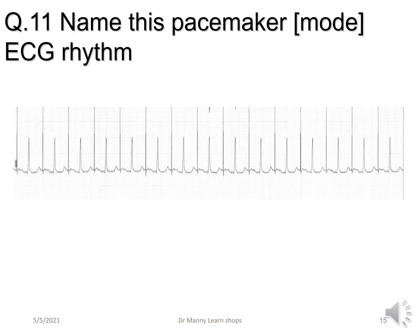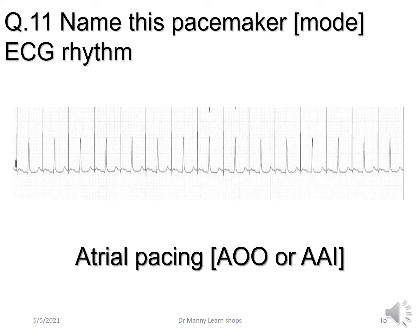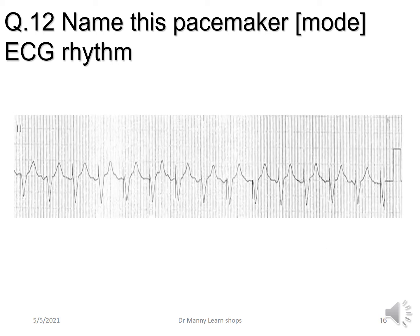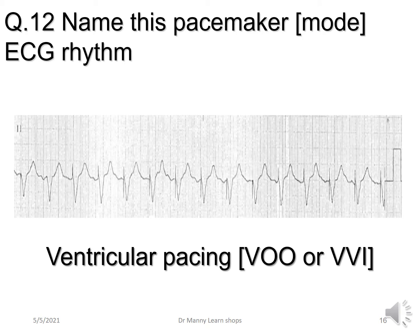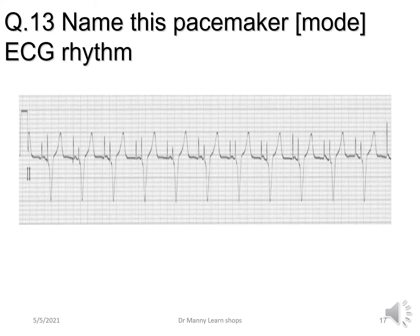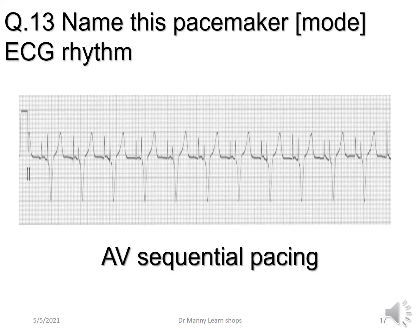Can you name this pacemaker mode by the rhythm? This is atrial pacing, which could be AOO or AAI. This next one is ventricular pacing, which could be VOO or VVI. And this one is AV sequential pacing — atrial ventricular pacing — which could be a number of different modes, but both the atria and the ventricles are being paced.